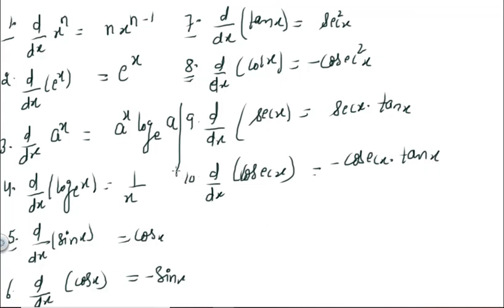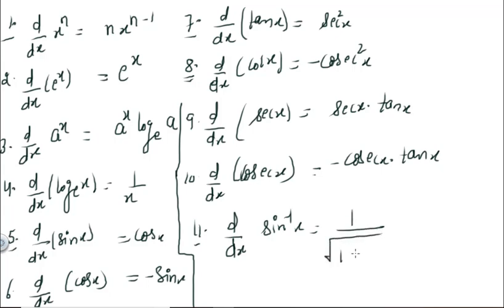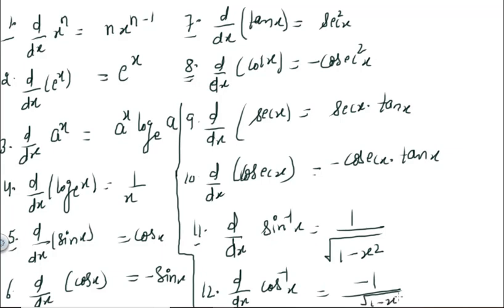Now for inverse trigonometric functions. Formula 11: d/dx of sin⁻¹x = 1/√(1 − x²). Formula 12: d/dx of cos⁻¹x = −1/√(1 − x²).